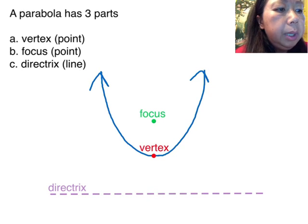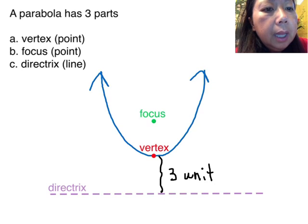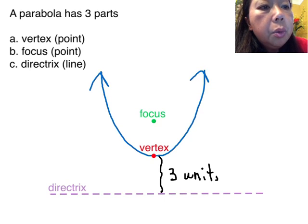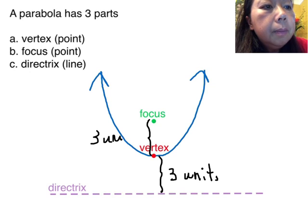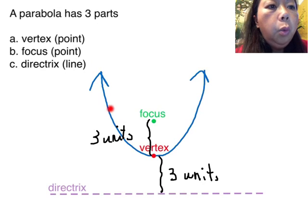Here's what I mean by exactly between: if the vertex was three units away from the directrix, then that means it's also three units away from the focus. So it's the same amount of steps away from the focus as it is from the directrix. Also, the parabola — the blue curve — will always curve toward the focus, never toward the directrix.